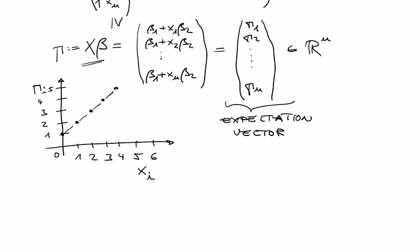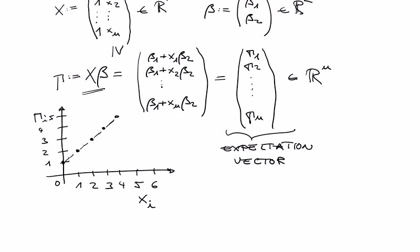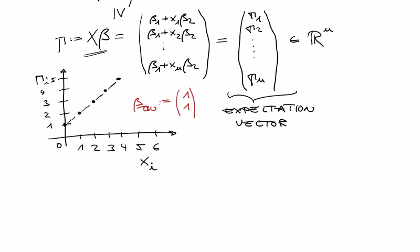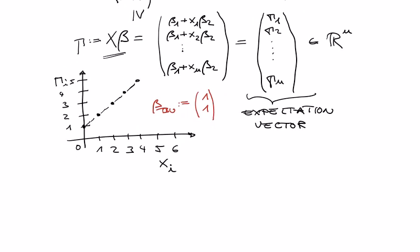What we have formulated is a model that, if we fix a specific set of true but unknown parameters — say beta_1 equals 1 and beta_2 equals 1 — we can evaluate our model and it makes a prediction, which is this straight line. For each value of x, we can compute our mu_i.